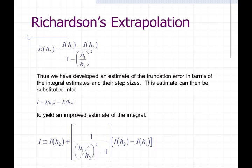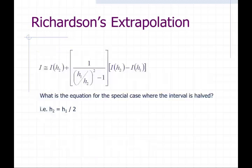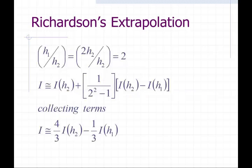Thus, we've developed an estimate of the truncation error in terms of the integral estimates and their step sizes. This estimate then gets plugged back into our original equation to yield an improved estimate of the integral. So we have the estimate at H2 plus the difference between the two estimates scaled by a factor relating the step sizes. For the special case where H2 is equal to H1 divided by 2, we end up with I approximately equal to four-thirds the estimate at H2 minus one-third the estimate at H1.